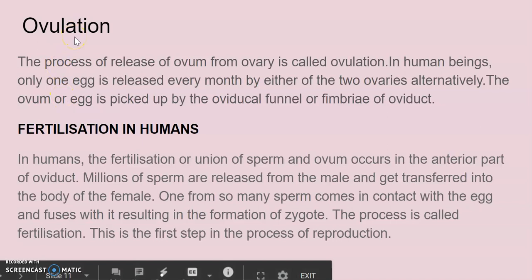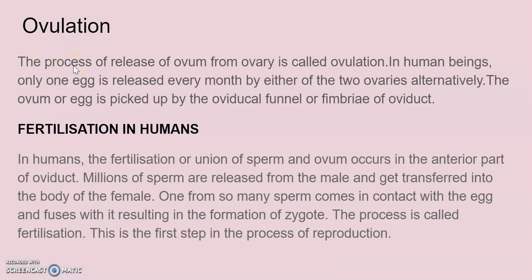After this, there is another process known as ovulation. Ovulation is the process of release of ovum from the ovaries. When the ovum is released from the ovaries, it comes into the oviduct. In human females, only one egg is released every month by either of the two ovaries alternately. The ovum is picked up by the funnel-shaped opening of the oviduct, which is connected to the ovaries.